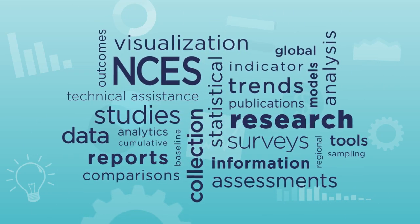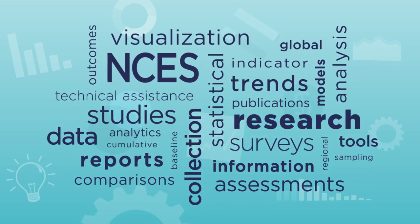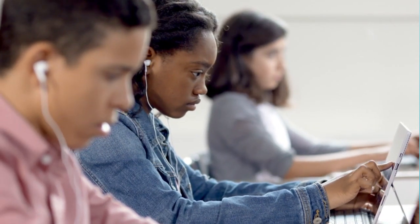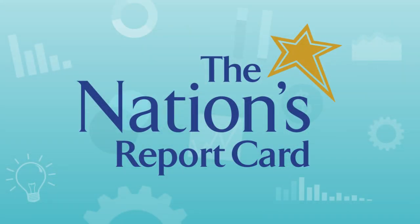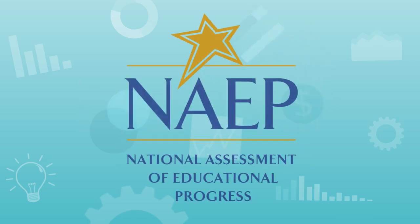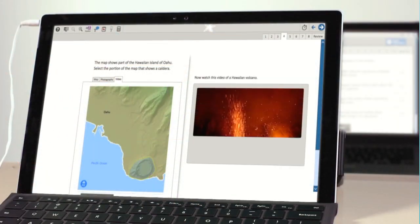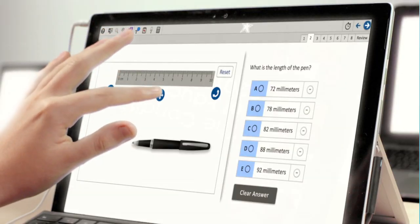From early childhood — even babies — to adulthood like your teachers, parents, and grandparents, NCES collects data through surveys and assessments. For example, maybe you've heard of the Nation's Report Card. This national report is from an NCES test called the National Assessment of Educational Progress, or NAEP. NAEP is an assessment of what American students like you know and can do in subjects like math, reading, art, and more.